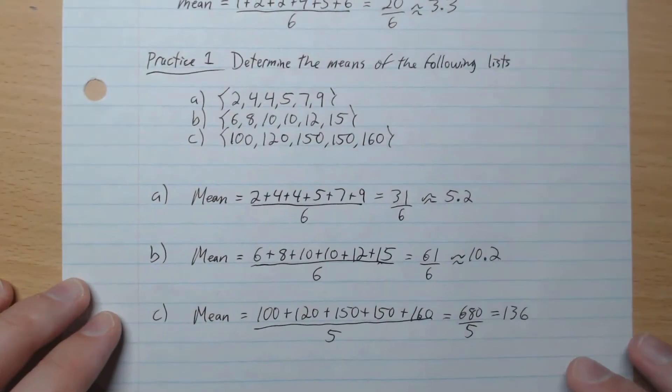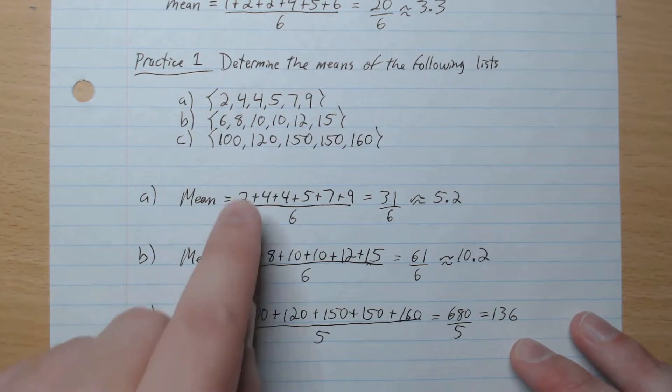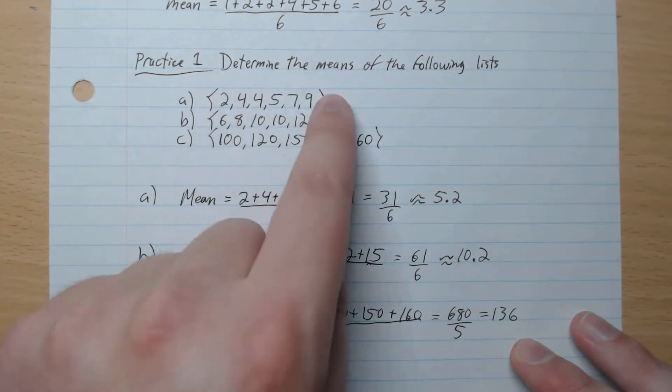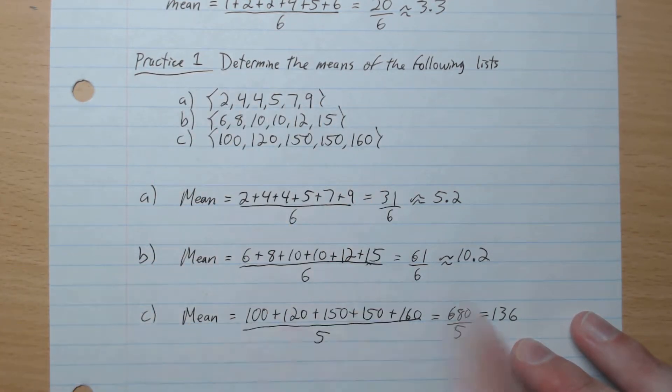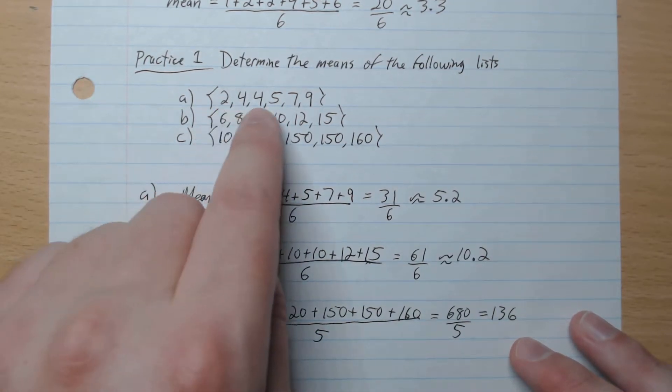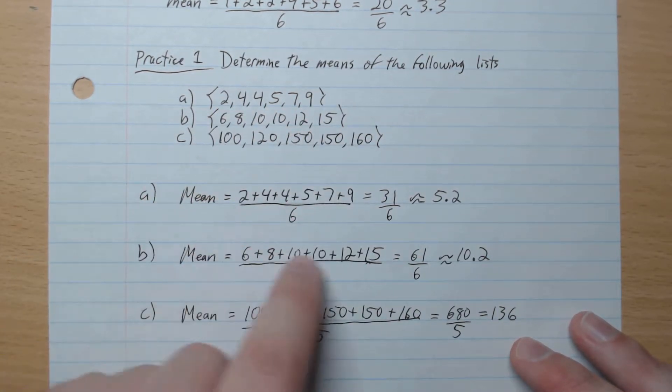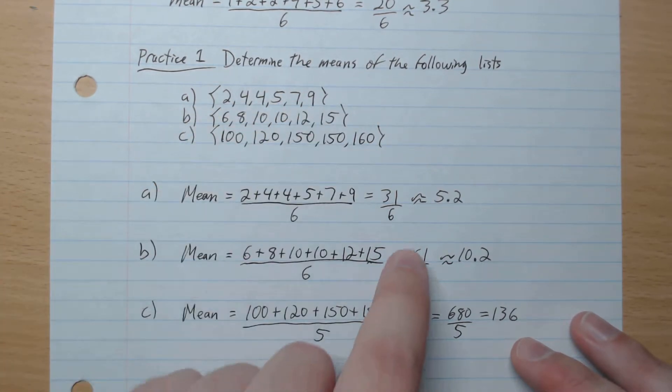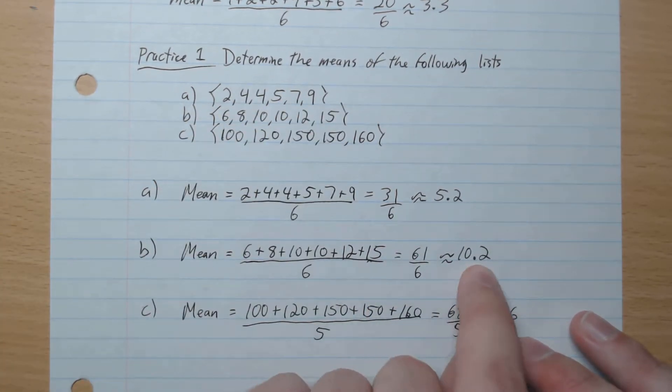Okay, we're back. So we are adding up the numbers. The first one has 6, so we add it up, divided by 6, which gives 5.2. B, add up the numbers, also 6, divided by 6, the amount of numbers in there, 61 over 6, which gives 10.2.